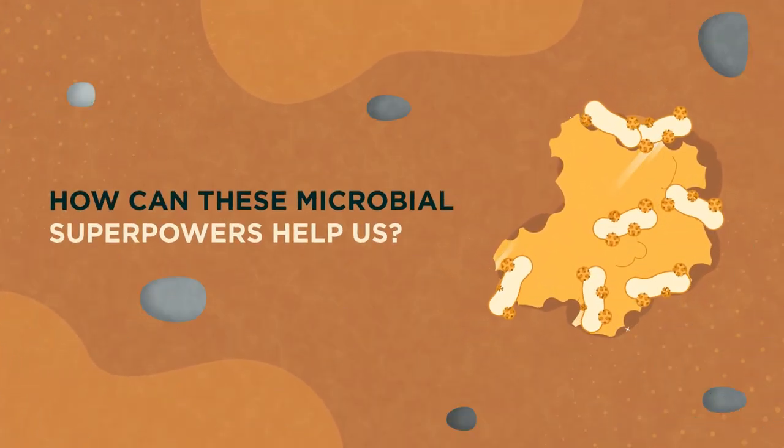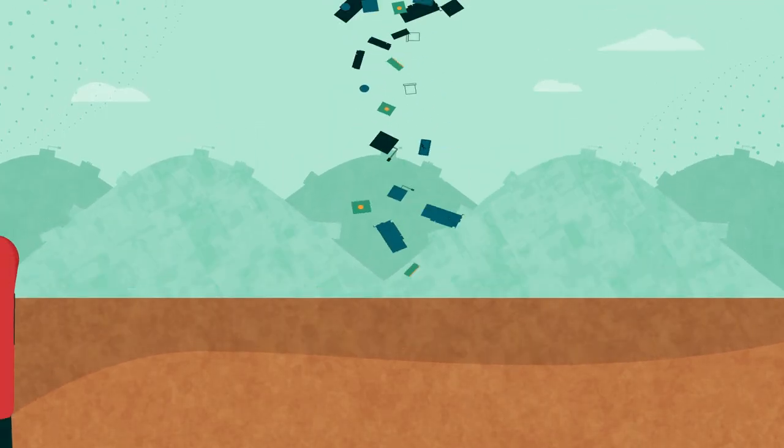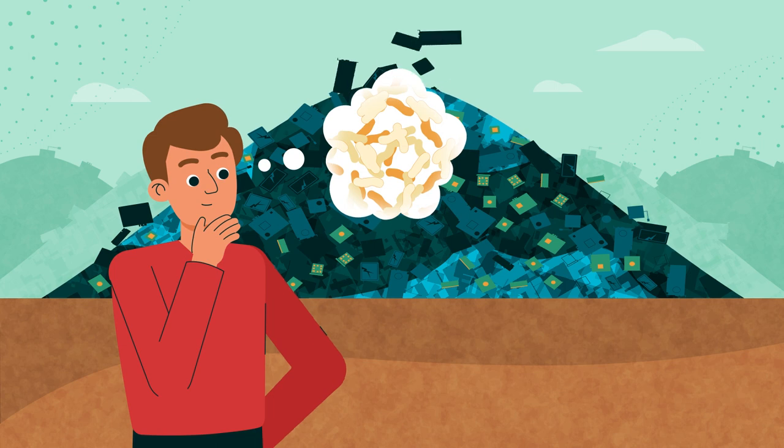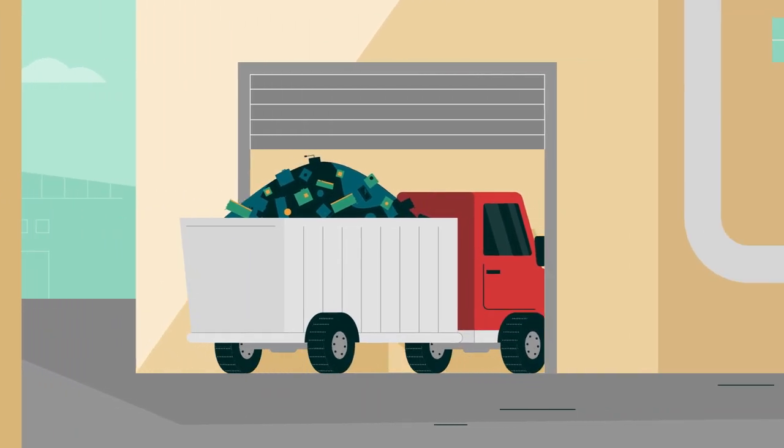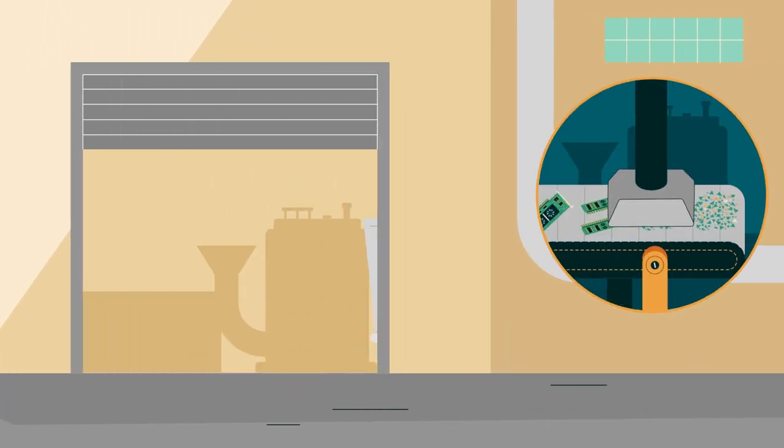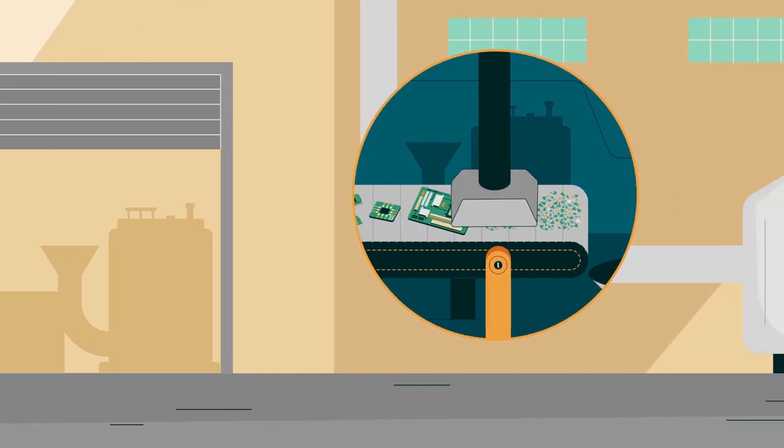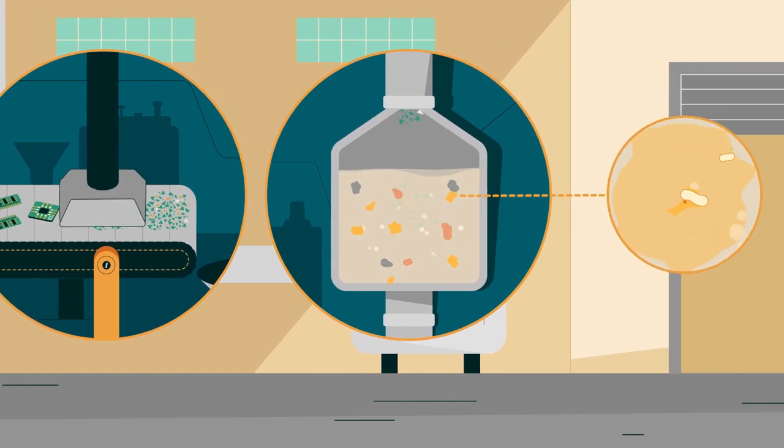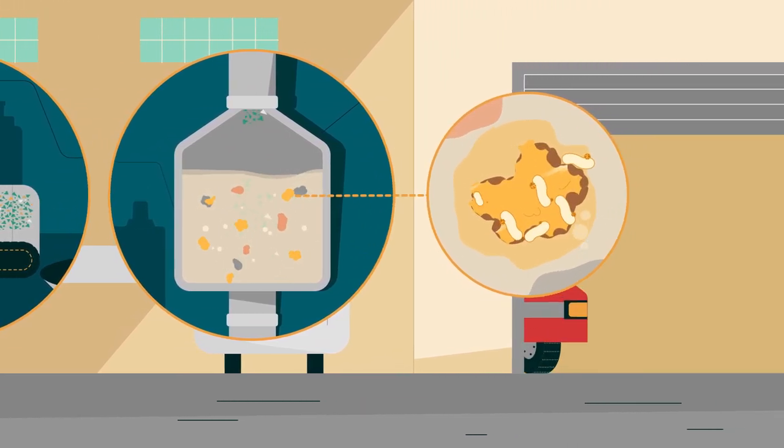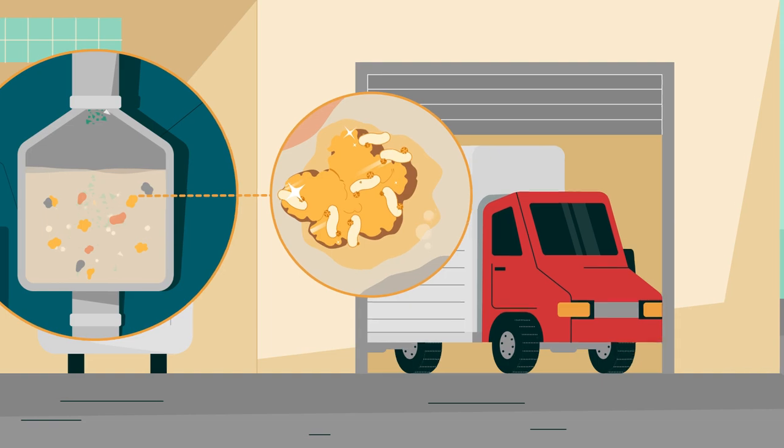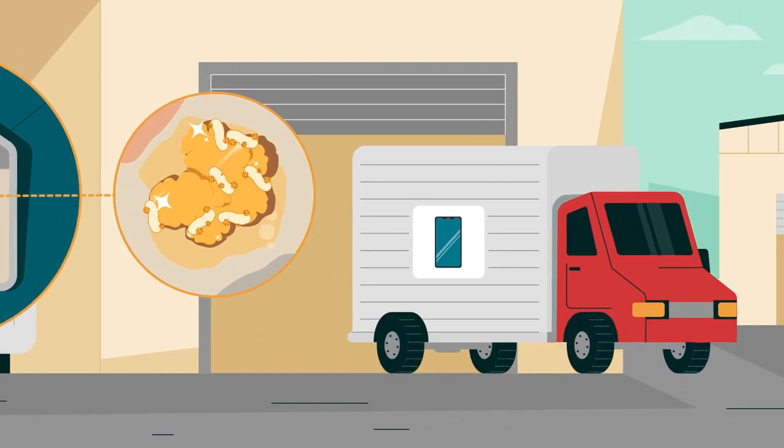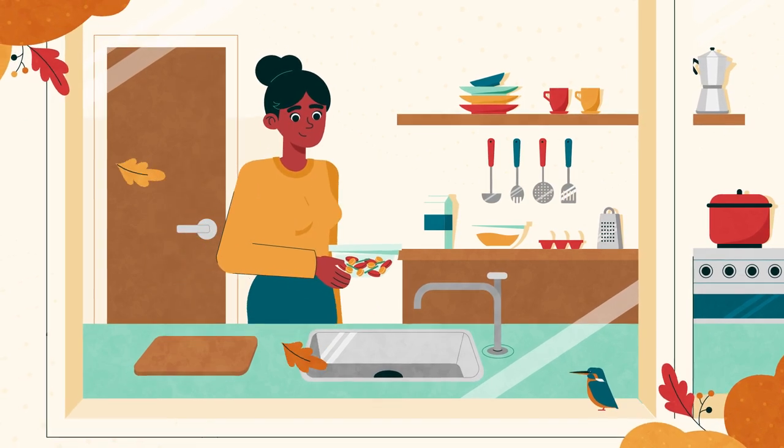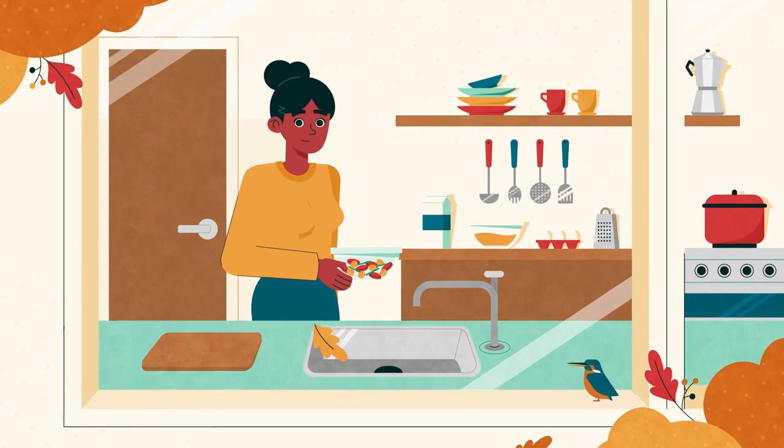Now the question is, how can these microbial superpowers help us? For starters, Delftia acidovorans can be used to recover gold from discarded electronics, helping us address one of our biggest concerns worldwide, e-waste. The improvement of high-throughput methods for studying these extraordinary microorganisms could identify new ways to dispose of and recycle electronics to protect the environment and ensure a better future. Isn't it incredible to think we could hold the key to a greener future in our kitchen sinks?